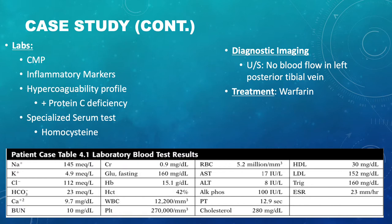The abnormal results in the blood work included an elevated white blood cell count of 12,000 and an ESR of 23. These results usually increase with inflammation. Other results that were also elevated include cholesterol of 280, HDL of 30, LDL of 152, and triglycerides of 160.